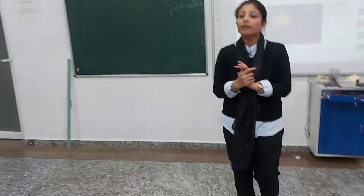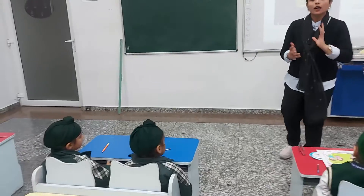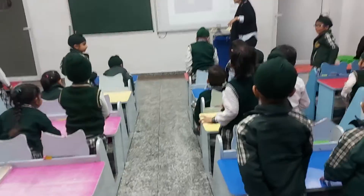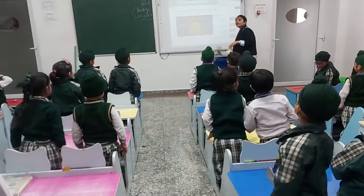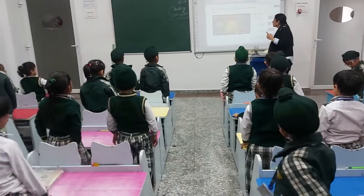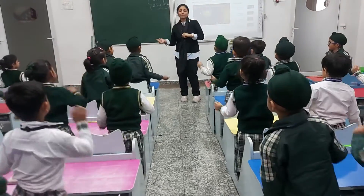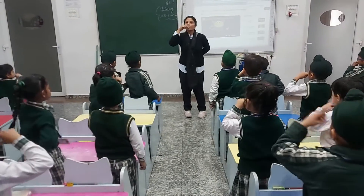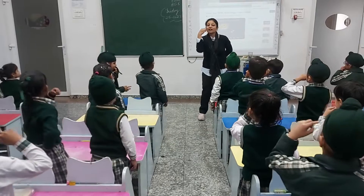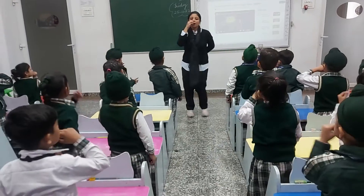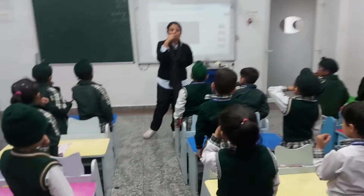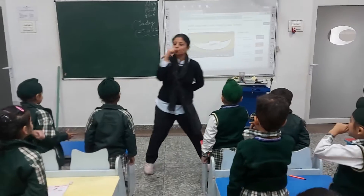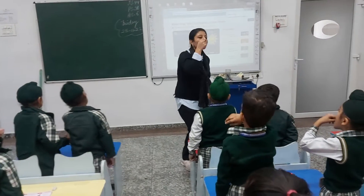So now children, we will do one rhyme related to a body part. So now I am going to play one rhyme. Stand up everyone. Do the rhyme. Speak with me and do the action with me also. Brush your teeth up and down. Brush your teeth round and round. Brush your teeth from left to right. Brush your teeth in the morning and night. Brush, brush, brush. Brush, brush, brush. Brush your teeth in the morning and night.